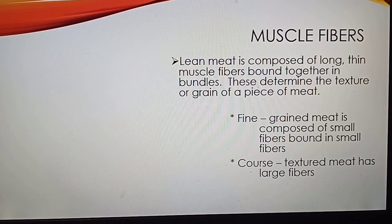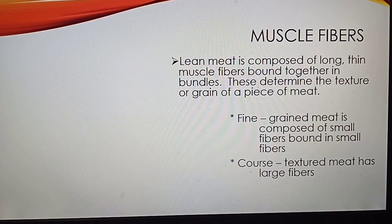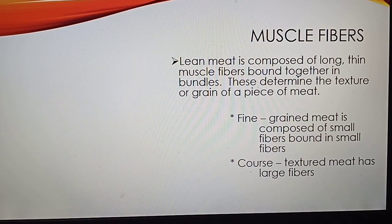Coarse-textured meat has large fibers and is also called tough meat. The fibers are longer and coarser, and there is more connective tissue. Tough meat needs much slow cooking to make it tender — for example, stewing.